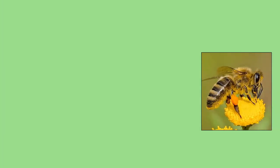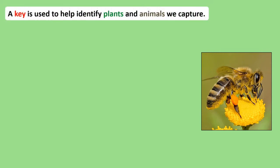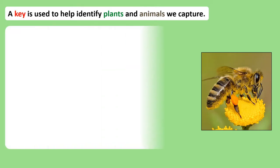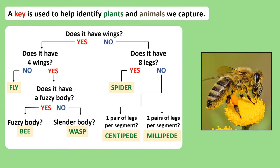So what if you are examining an animal you've caught but you don't know what species it is? In this case we use a set of questions called a key to help us identify the animal. A key is a set of questions you answer based on an animal's characteristics. For example, this animal has wings, so we answer yes to the first question. The animal has a total of four wings and has a fuzzy, hairy body, which leads us to identifying it as a bee. A key can also be used to identify plants that you find in the habitat.